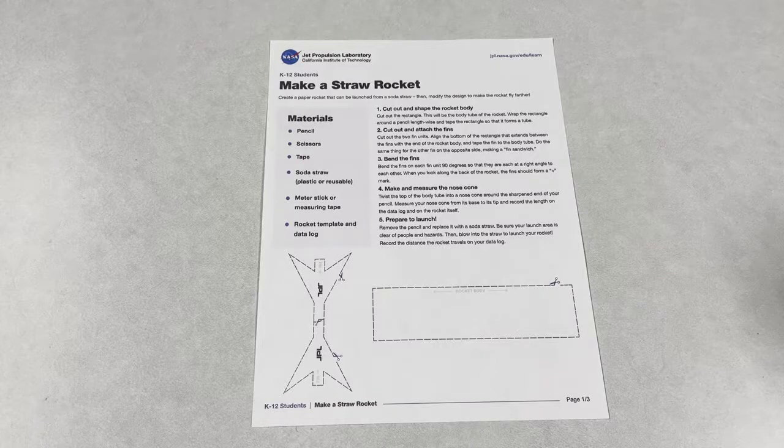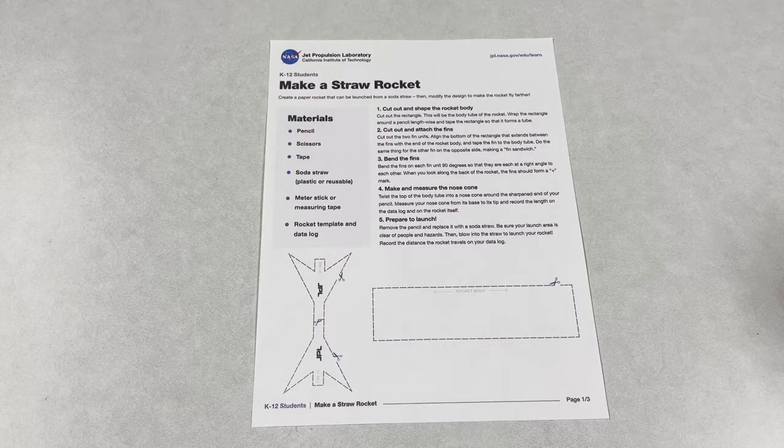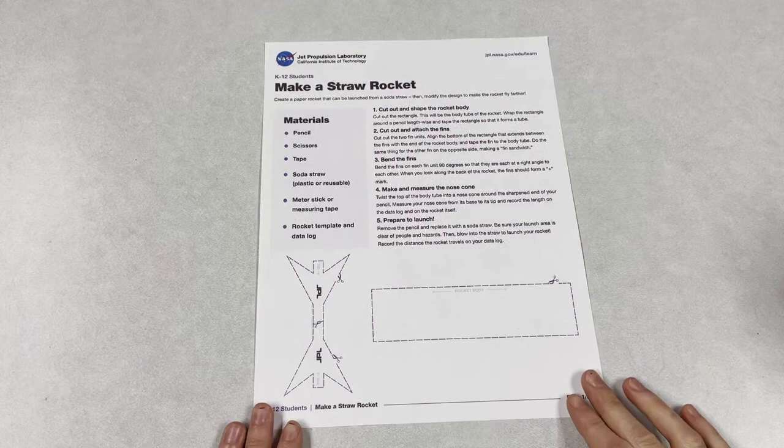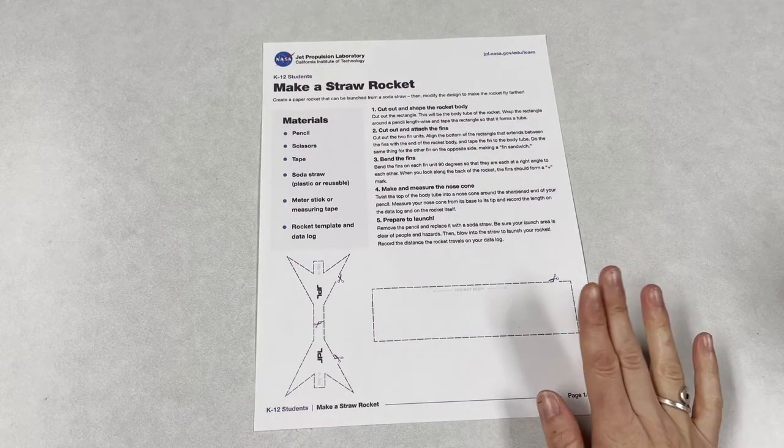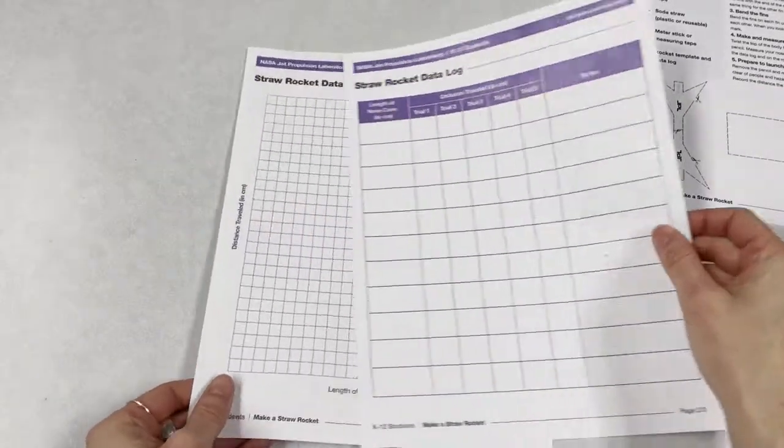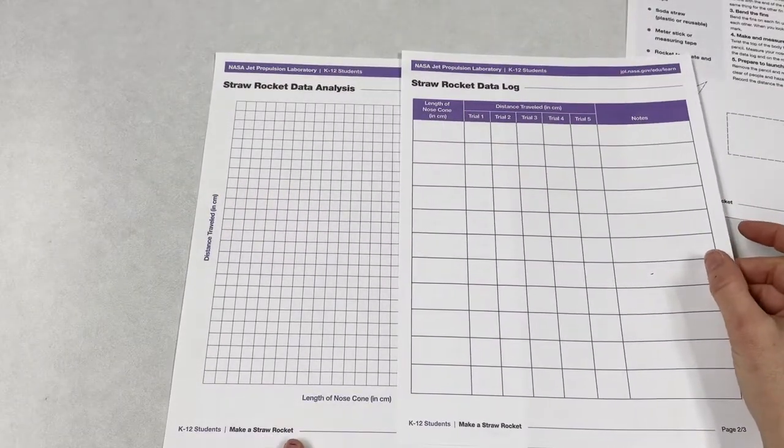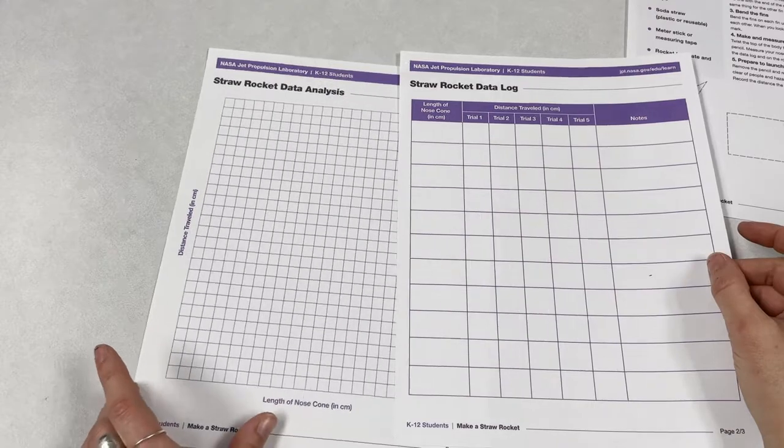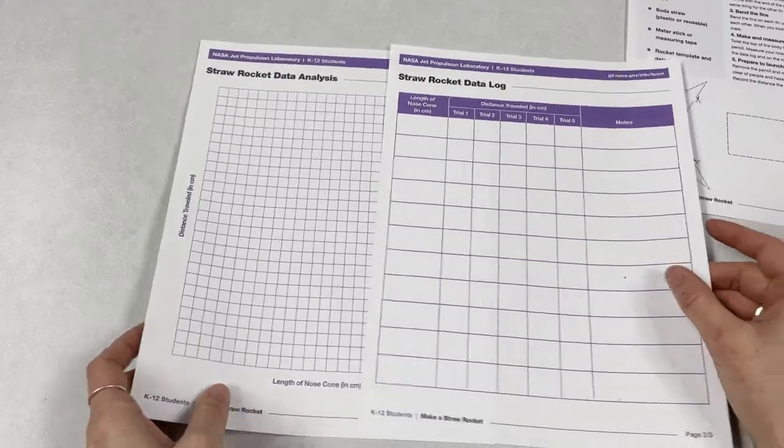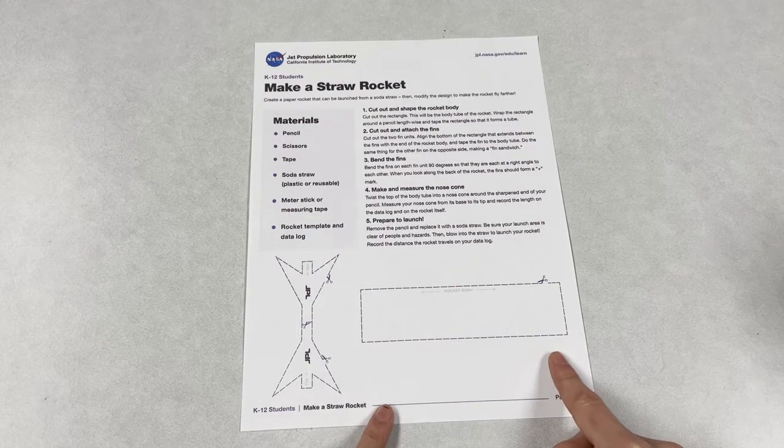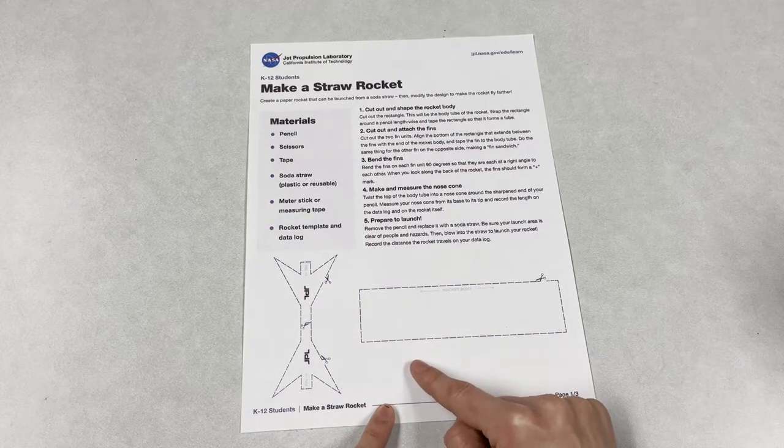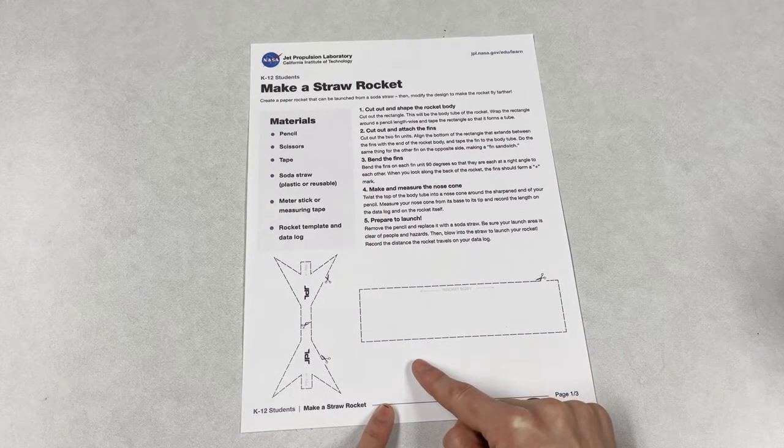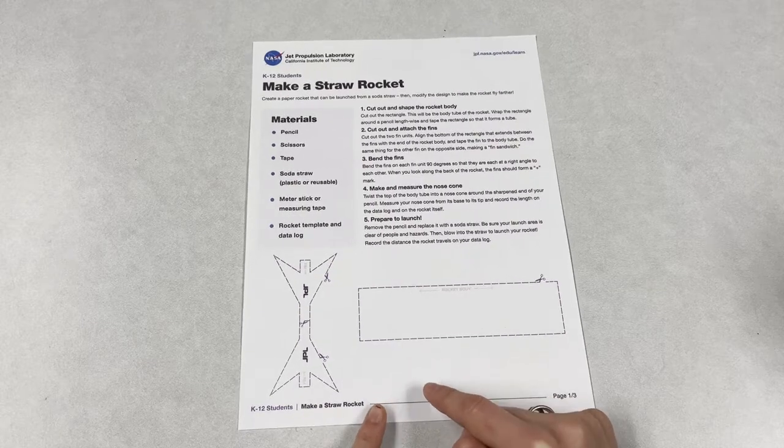Now let's take a look at the second type of rocket that we can make. This first page here has the template for our rocket and some instructions. And then the following two pages are some data sheets that you can use to track your rocket launches.